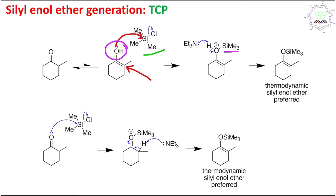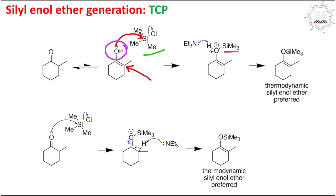In the reaction medium there is triethylamine, which is selective for proton abstraction. Although it is a weaker base, the oxygen is carrying a formal positive charge, making the H⁺ easier to release. Consequently, triethylamine is capable of abstracting this proton, and ultimately this results in the thermodynamically favored silyl enol ether.